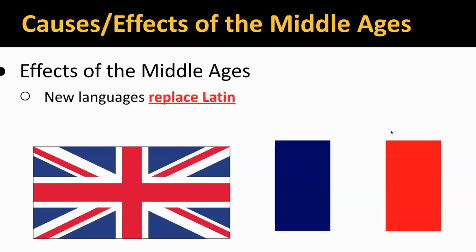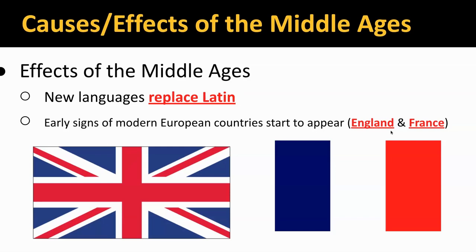New languages replaced Latin — you're going to get English, French, Spanish, and the other languages we associate with Europe today. You're also going to have early signs of modern European countries starting to appear. One of our learning outcomes in this unit is going to be the formation of Western Europe, using both England and France as our examples — seeing how they establish some of their laws and judicial systems that become a cornerstone of what those two countries stand for today. But that's towards the end of the Middle Ages.